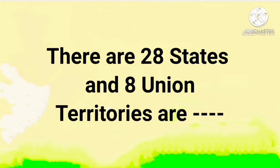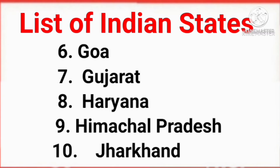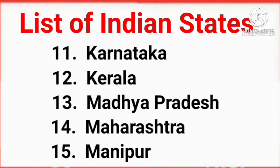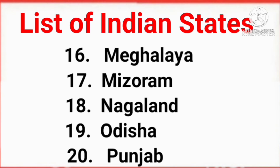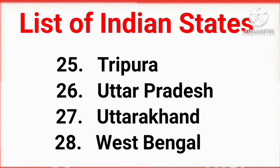There are 28 states and 8 union territories. List of Indian states: Tripura, Uttar Pradesh, Uttarakhand, West Bengal.